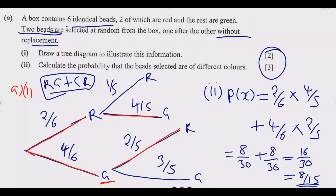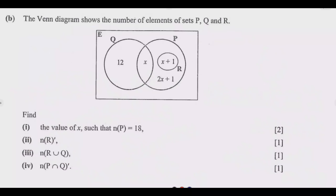Question two: a Venn diagram shows the number of elements of sets P, Q, and R. Find the value of X such that (1) the number of elements in P equals 18; (2) the number of elements in R complement; (3) the number of elements in R union Q; (4) the number of elements in P intersection Q complement. This question is easier if you understand the symbols.